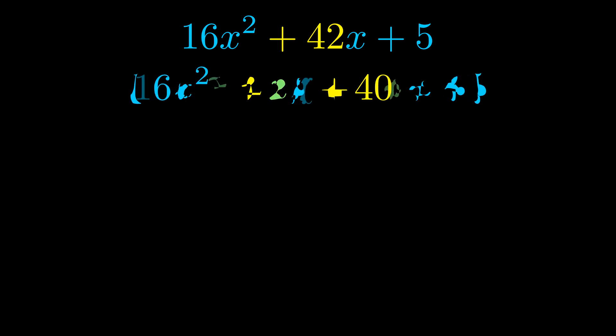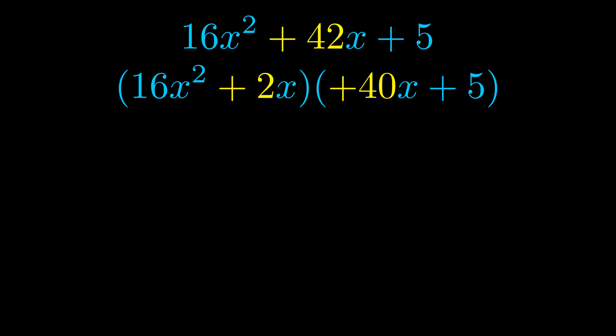Once we've done this we go ahead and we put parentheses around the first term in the last term. And we do that so that we can take the greatest common factor out of both terms. We can see the greatest common factor is now outside in green.